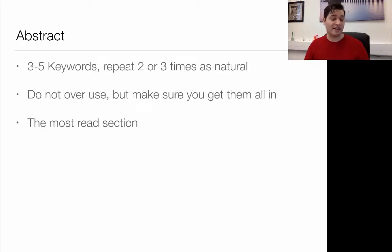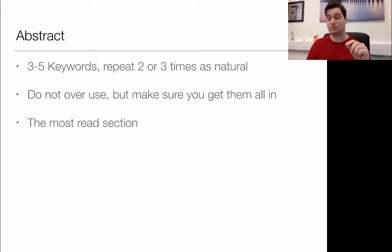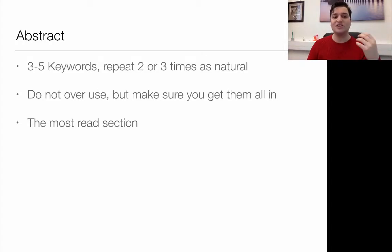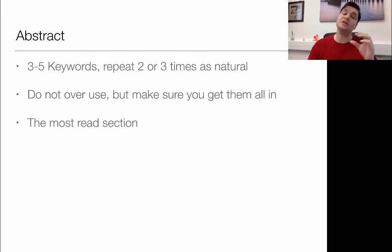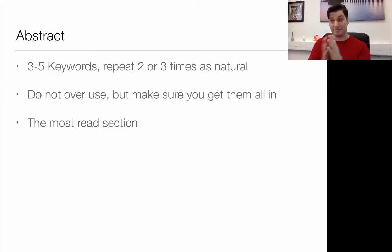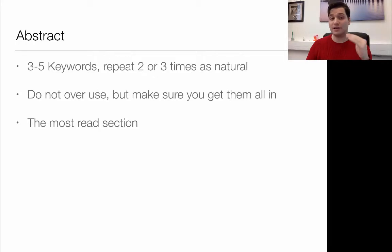Moving on to your abstract: you want three to five keywords, and you want to repeat them two or three times naturally. You're not hammering them in or going over the top — just using them. Don't overuse them. Also remember the abstract is one of the most-read sections in your entire paper, so having a great abstract with well-placed keywords will draw the user in and make them interested in reading further.